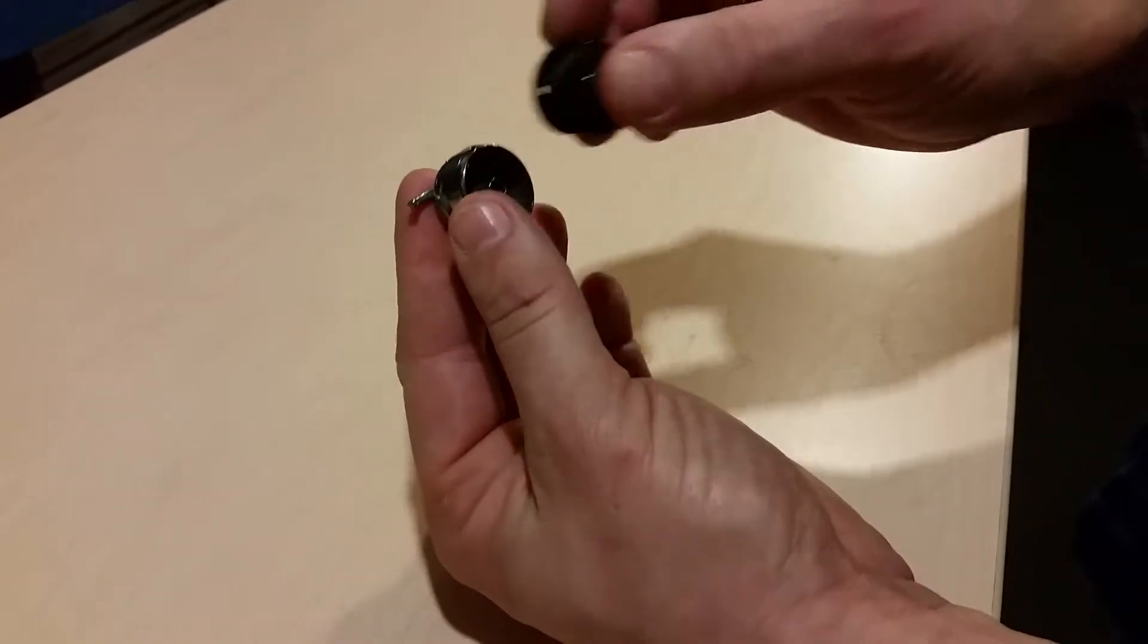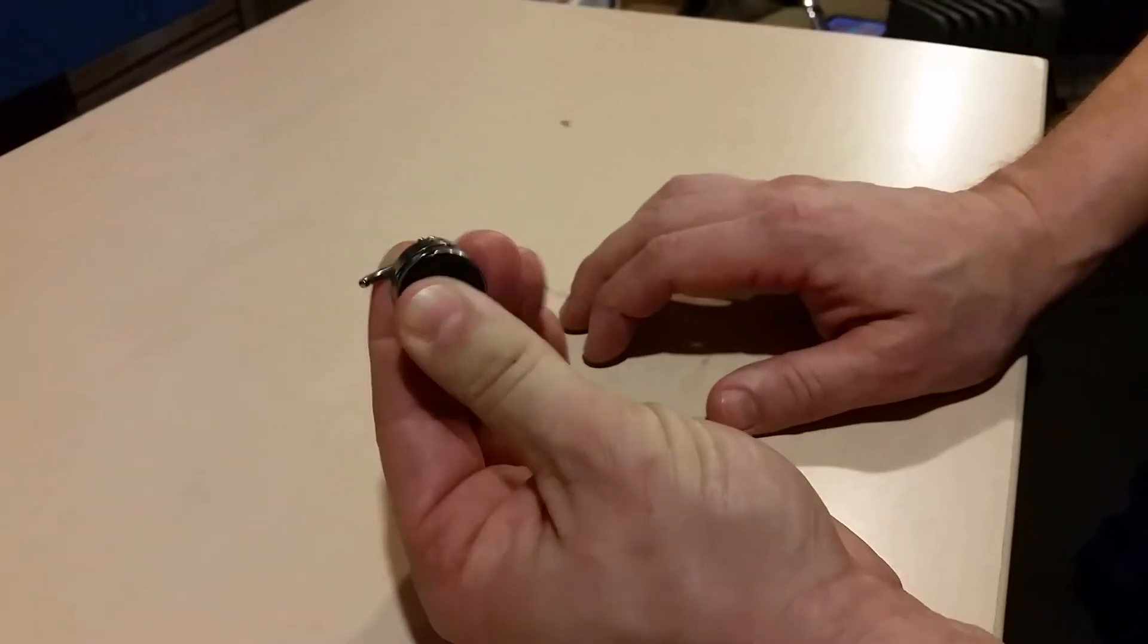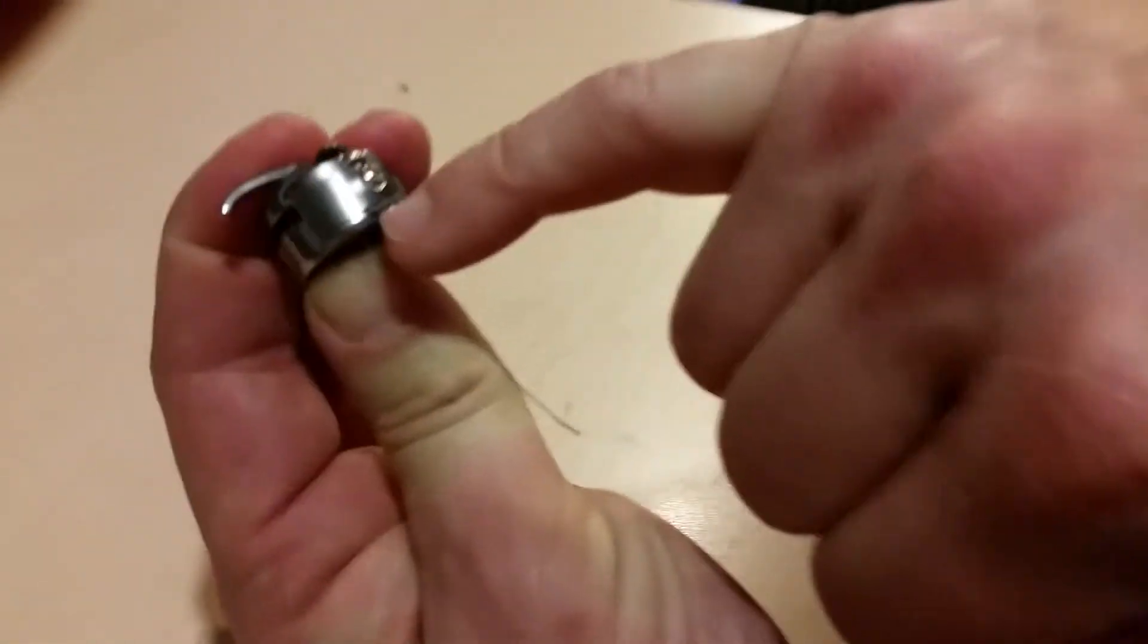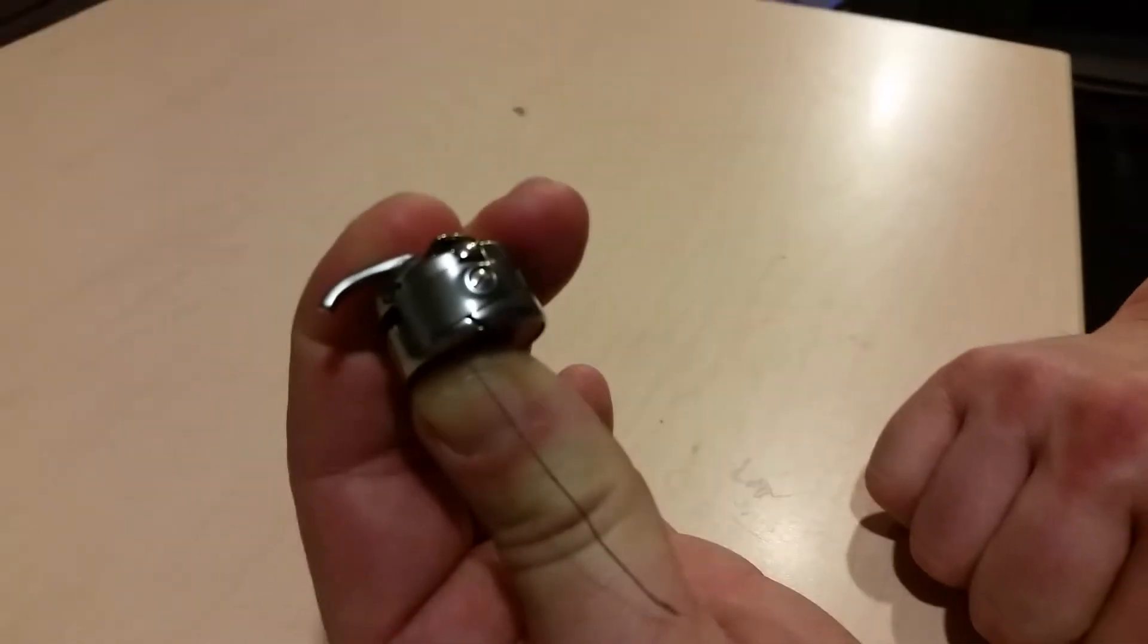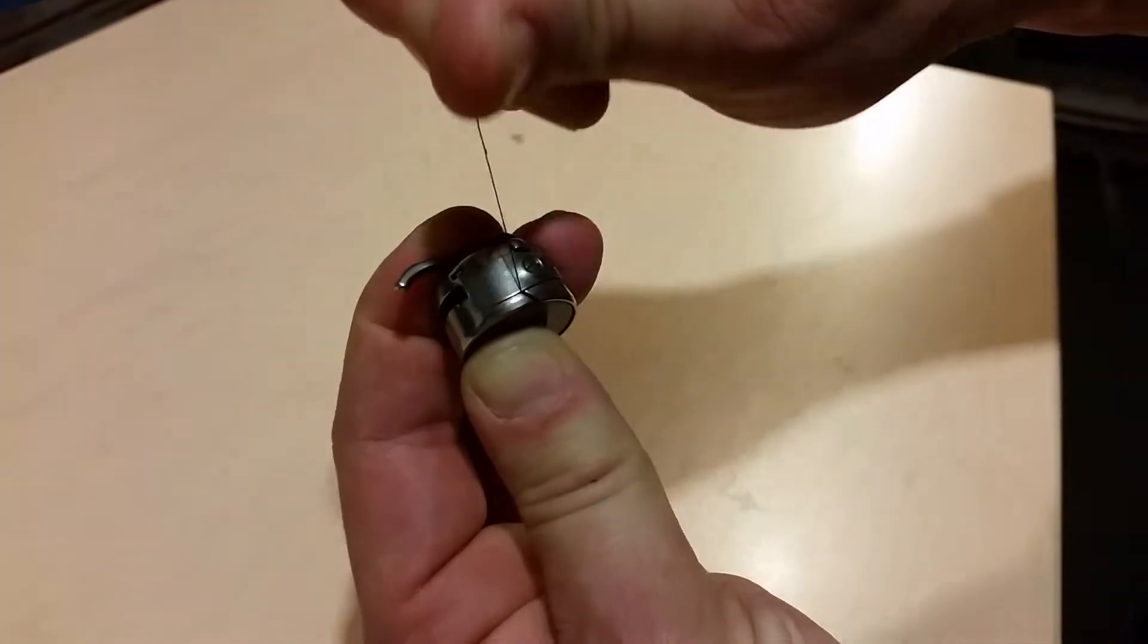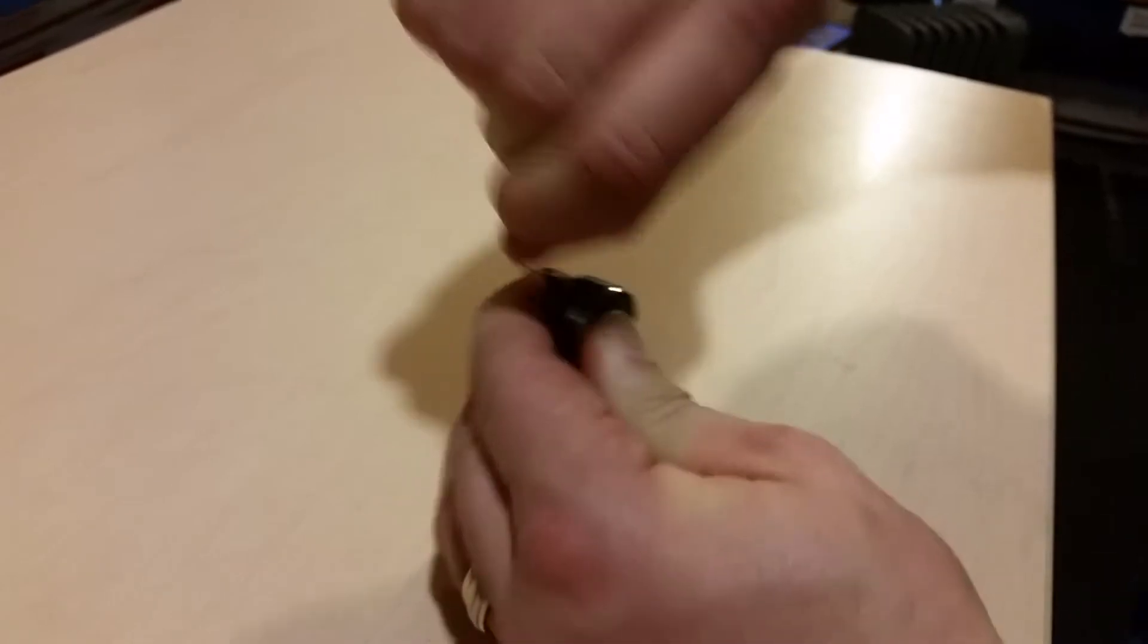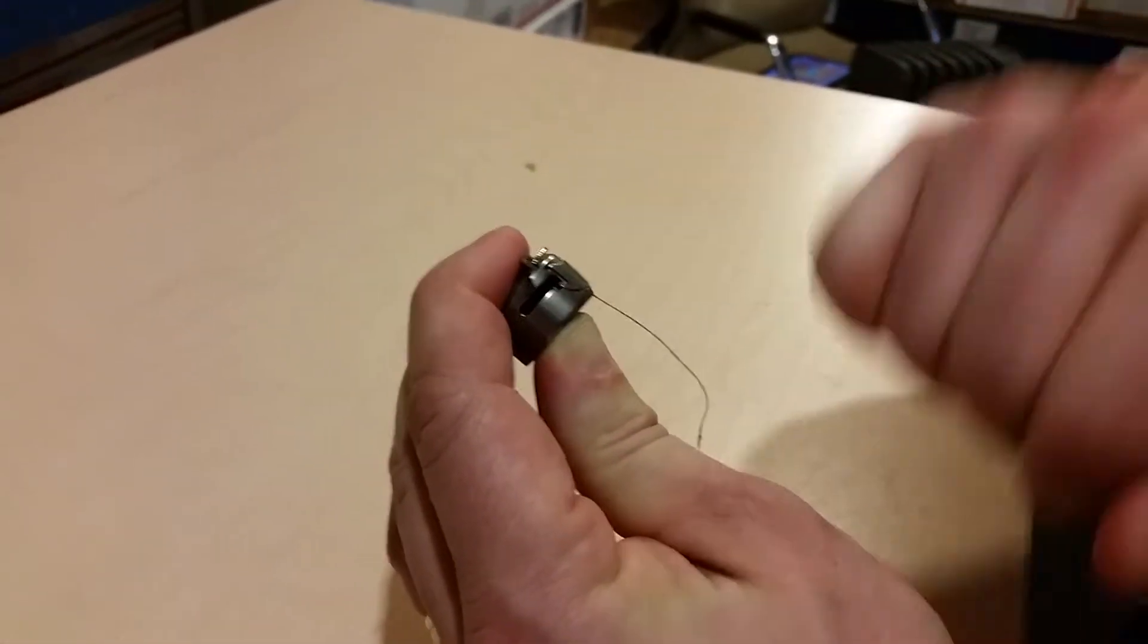You take your bobbin case, you put your bobbin into the case. Holding it now, you can find this groove right there. We're going to put it into that groove. The thread is going in the groove and you're pulling it through until it's inside that area.